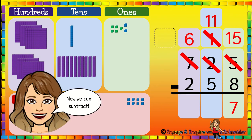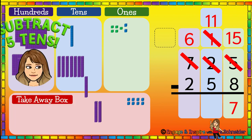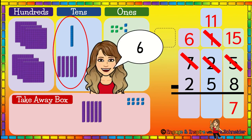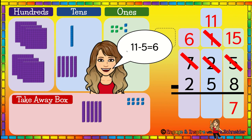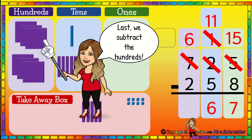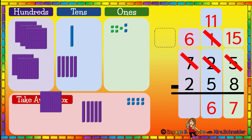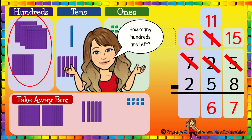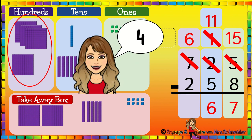Now we can subtract — now we have enough to take away five tens. One, two, three, four, five. How many tens are left? Six. Eleven minus five is six. Last, we subtract the hundreds place. Here we have six hundreds and we need to take away two. How many hundreds are left? Four. Six minus two is four.